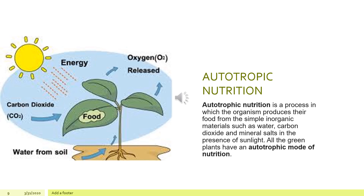Right from childhood, from class three and four, we have been learning the autotrophic mode of nutrition — that is photosynthesis — how plants prepare their own food in the presence of sunlight.